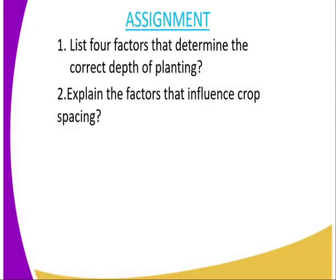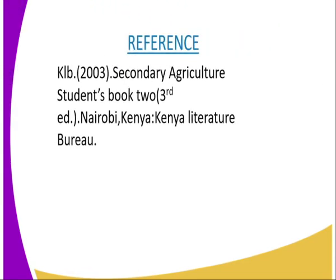On to today's assignment. The first question: list four factors that determine the correct depth of planting. The second question: explain the factors that influence crop spacing. For reference, you can refer to the Secondary Agriculture student book, published by the Kenya Literature Bureau.